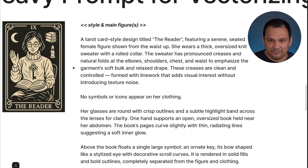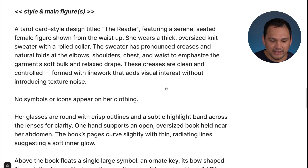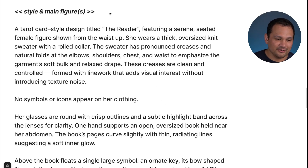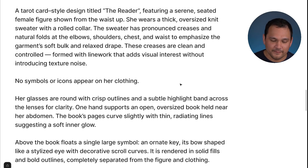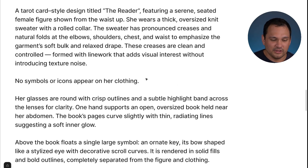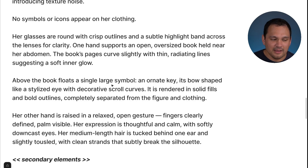Again, we do the style and main figure section here. We set up the style, describe the main subject in detail, and then do something the 4.0 model can do — we negate the possibility of symbols or icons appearing on her clothing. This keeps the 4.0 generator from spending a bunch of its resources on things that make the design worse. We continue describing the main figure, the action, what she's holding, and what she's wearing.